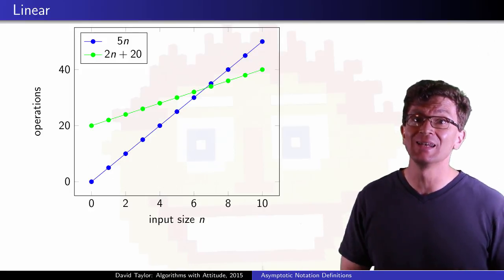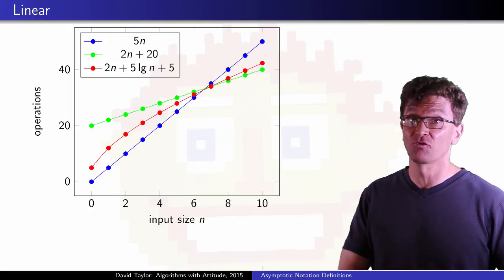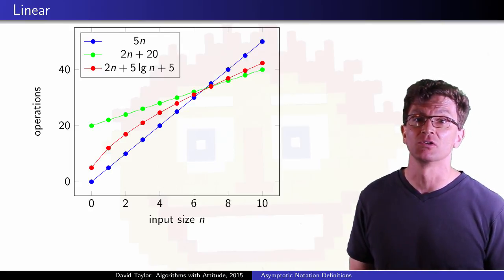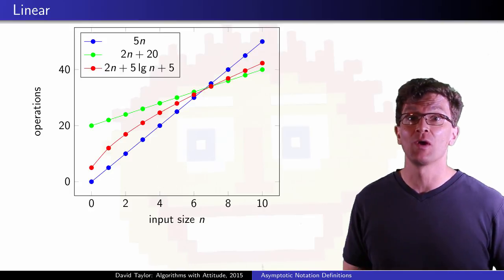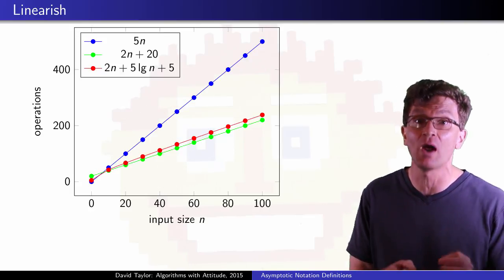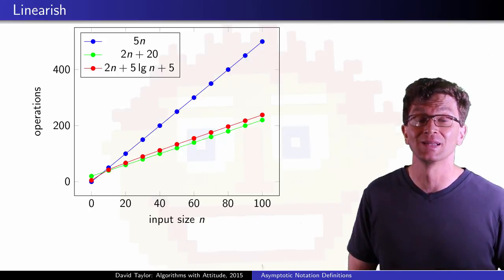But what if we had a small non-linear term? In this case, it looks like from 8 on, our function is sandwiched between the other two linear functions. Especially if we go further out, we see that our new function really is linear-ish, it looks very close to the 2n plus 20 linear function.